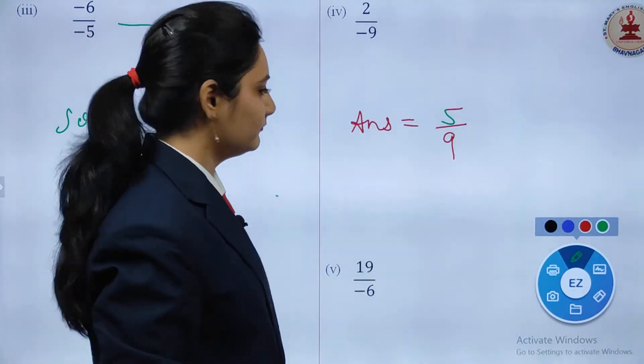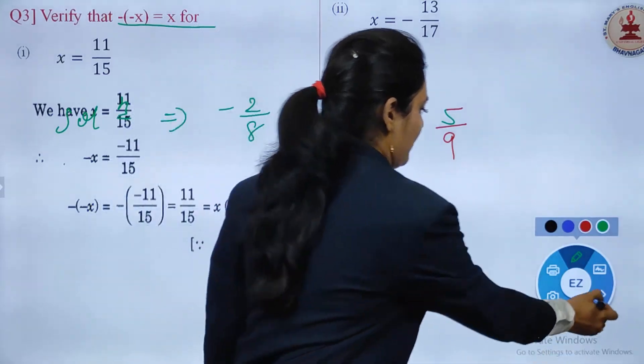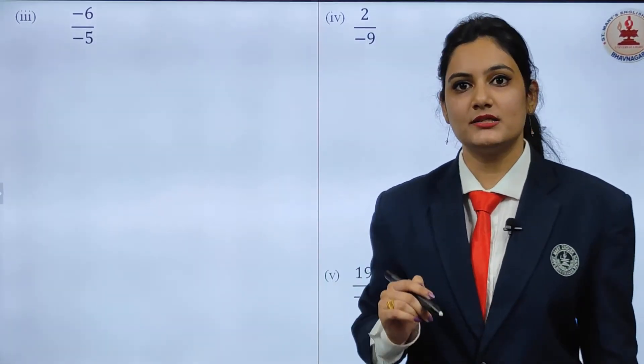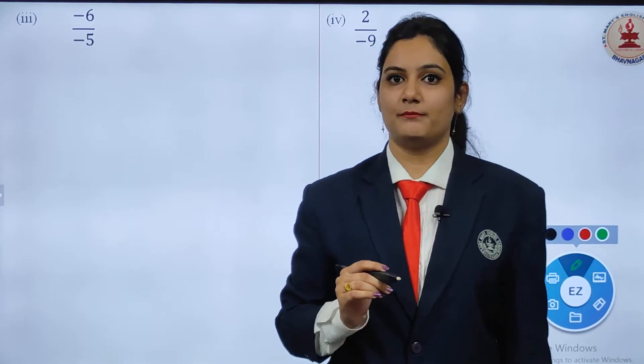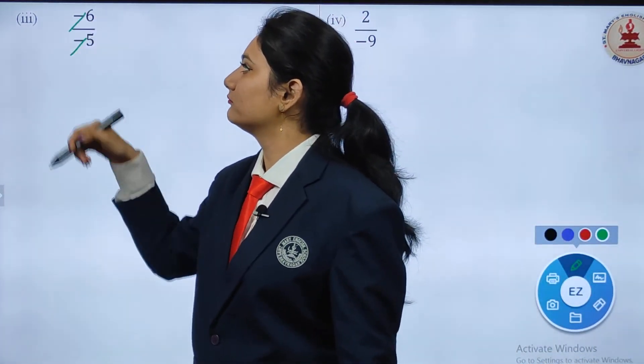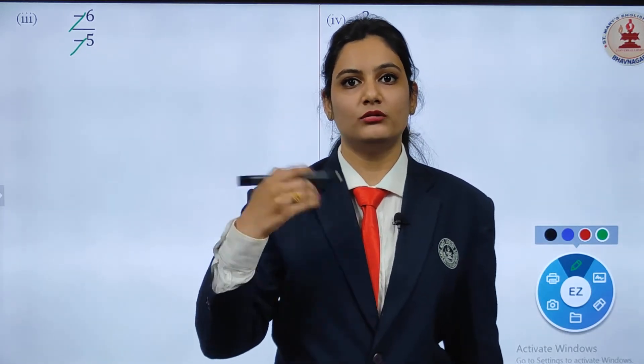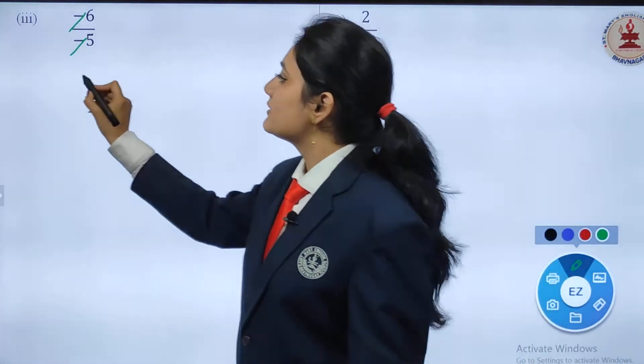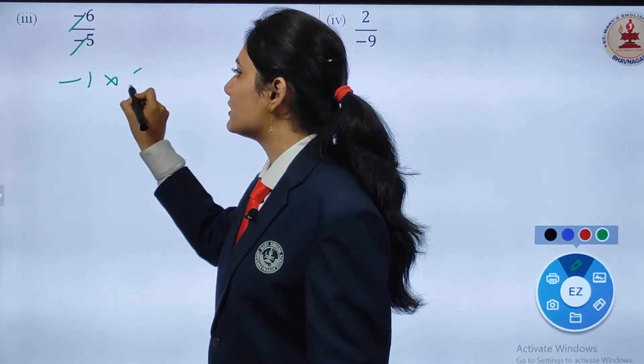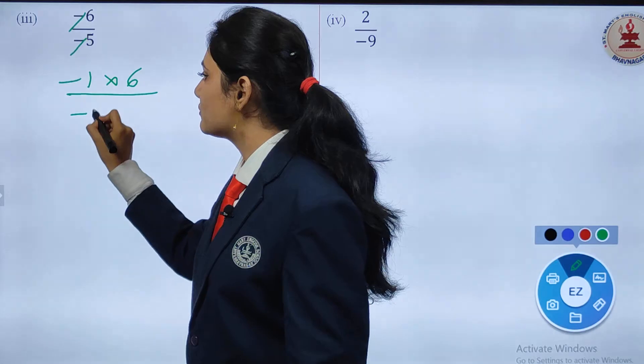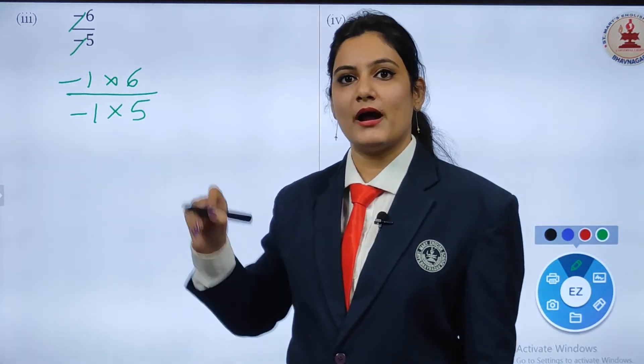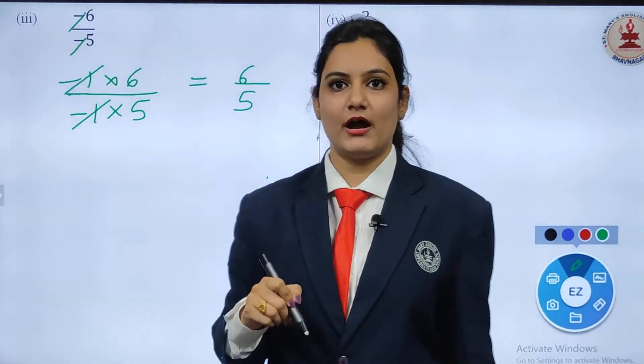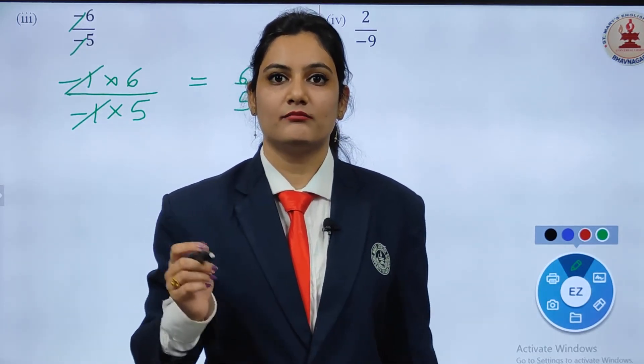Now coming to the next question: -6/-5. First step, cancel both signs because when numerator and denominator are both negative, just cancel them. Now there is depth in this. See, -1 × 6 = -6, and the denominator is -1 × 5. So -1 and -1 cancel out, giving us 6/5.